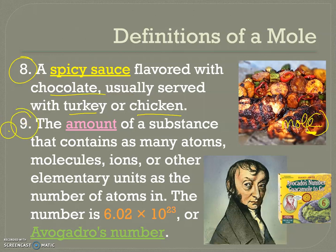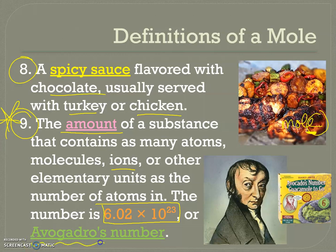Definition nine — the one we're going to use — is an amount, a quantity of a substance like atoms, molecules, or ions (my favorite word) and other elementary units. Atoms are counted in the number 6.02 × 10²³, affectionately known as Avogadro's number, named after this stud right here: Amadeo Avogadro, who came up with all of those calculations.